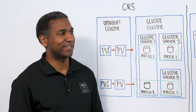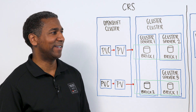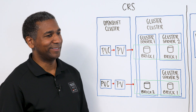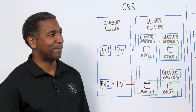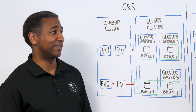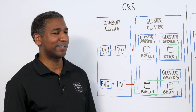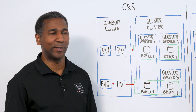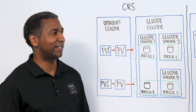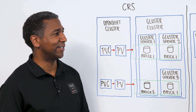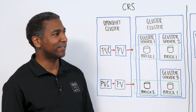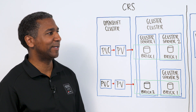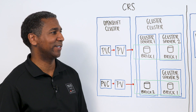So manual processes aren't very DevOps friendly at all. And for this reason, OpenShift came out with Gluster storage. Gluster provides us with a way of dynamically allocating storage within our deployment. So Nick, can you tell us a little bit about how Gluster works?